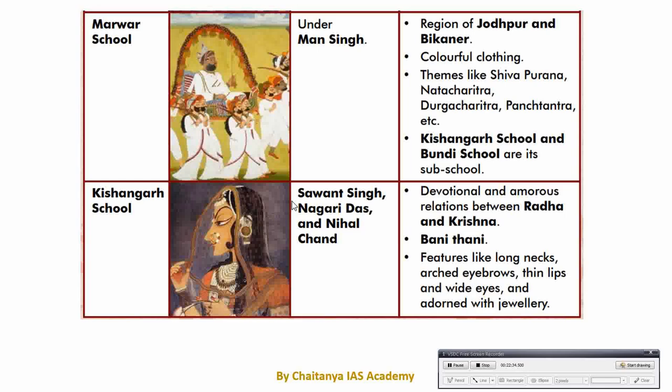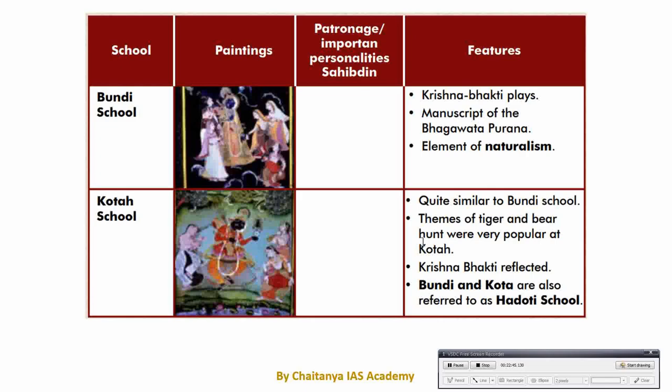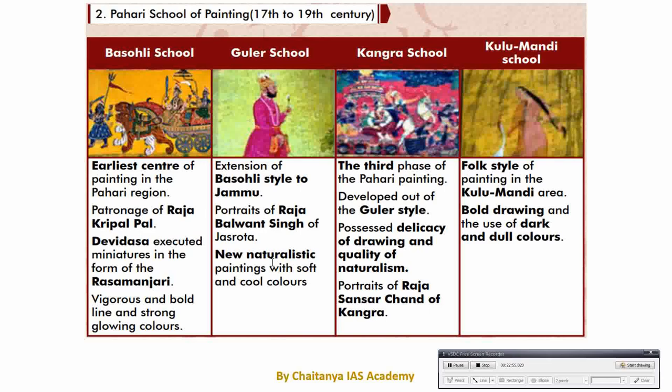The next school is Bundi school of painting, also dedicated to the Radha-Krishna love story. Next is Kota, similar to Bundi school of painting. Along with regional painting, the Pahari school of painting is also prevalent. In the Pahari school of painting there are four stages: first is Basohli school, second is Guler school, third is Kangra school, and fourth is Kulu Mandi school. These four are improvements upon the previous school — Basohli improved into Guler, Kangra is the improvement of Guler, and Kulu Mandi is the improvement of Kangra school of painting.